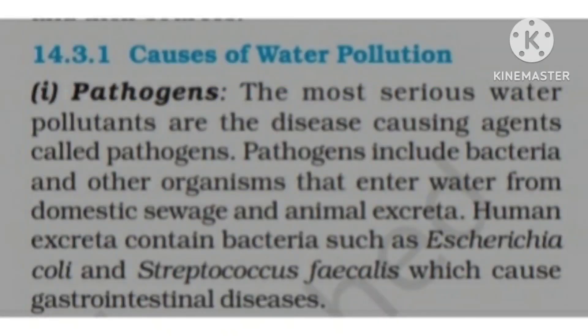Pathogens are disease-causing agents that affect human health. Two important names to remember: E. coli and Streptococcus fecalis — bacteria found in human excretion. These cause GIT, that is, gastro-intestinal diseases.